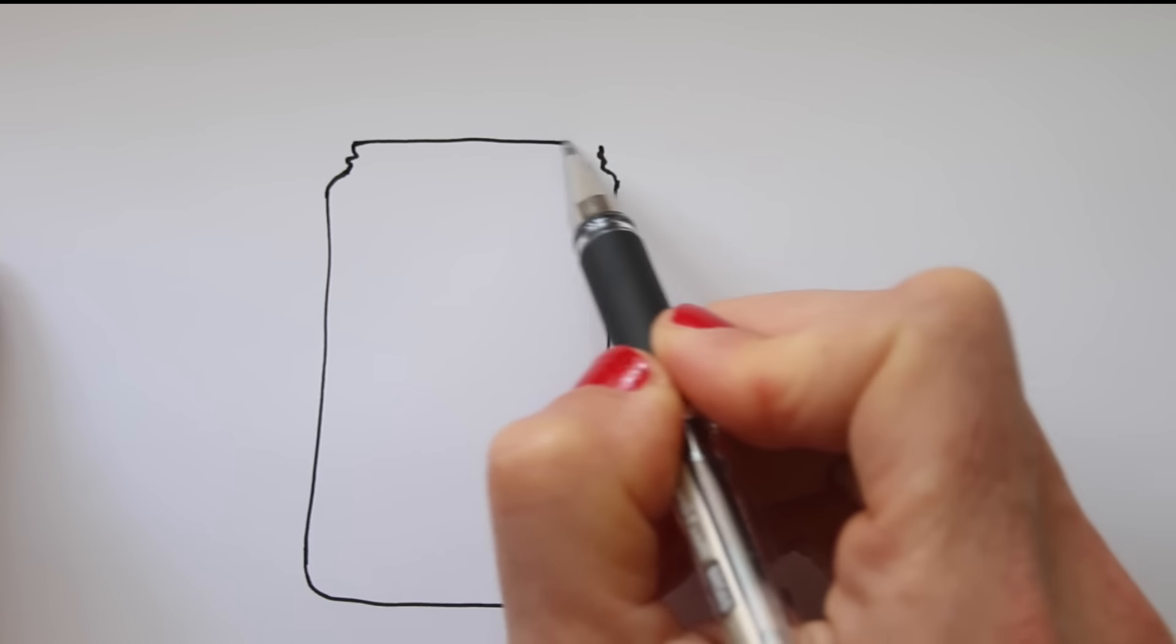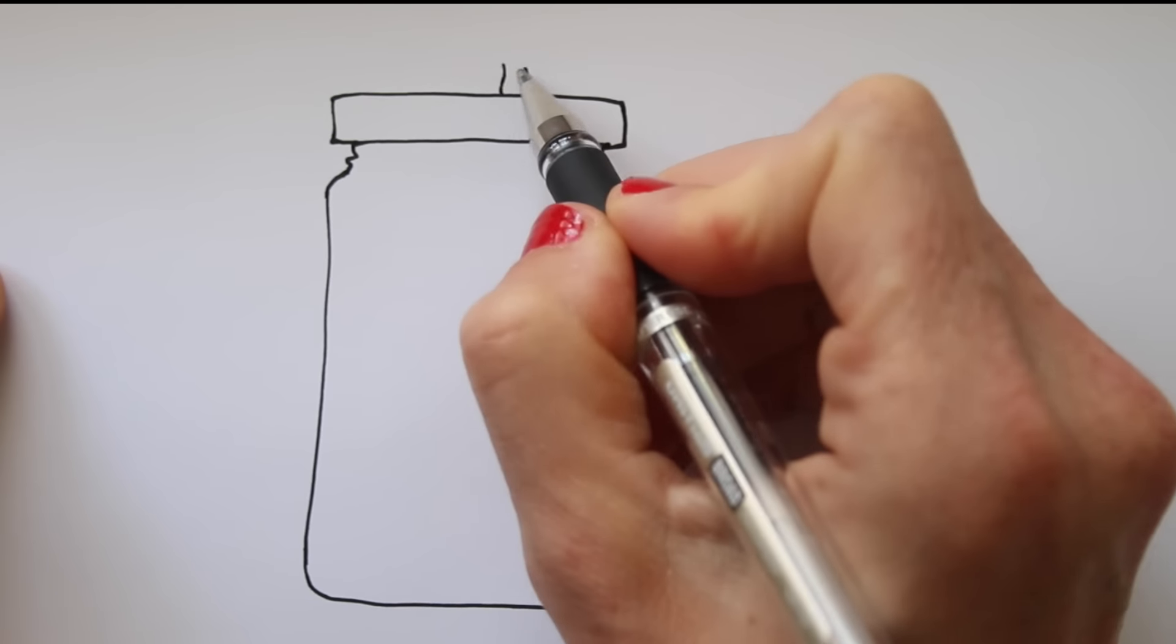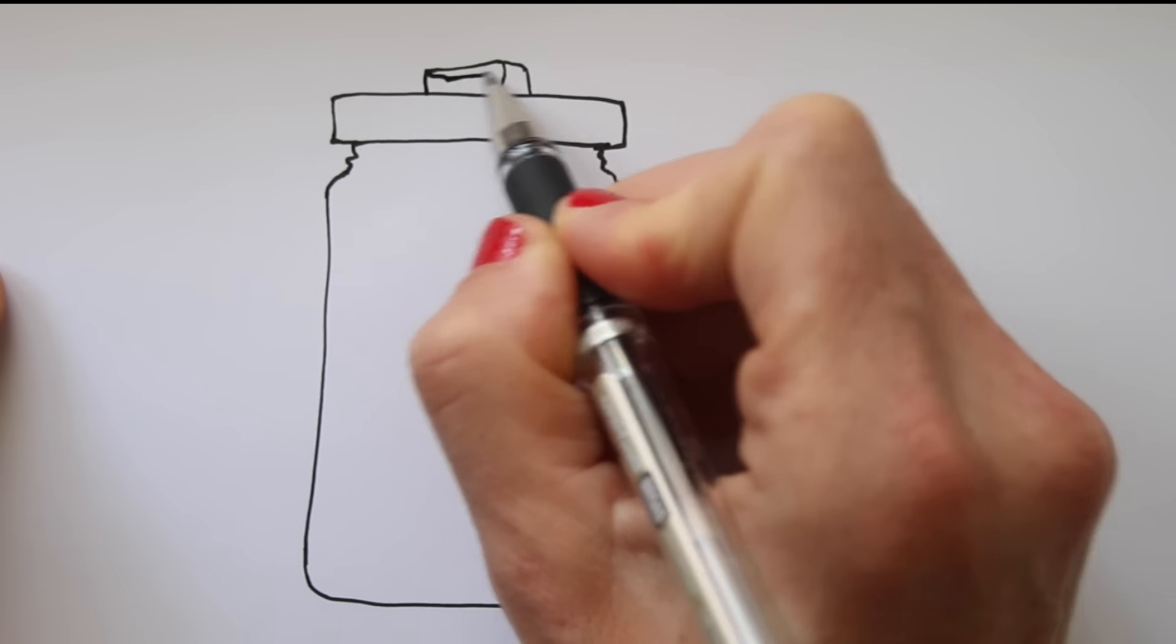I start with the outlines, and then I look at my subjects to find the shaded areas. Squinting your eyes can help to see them better.